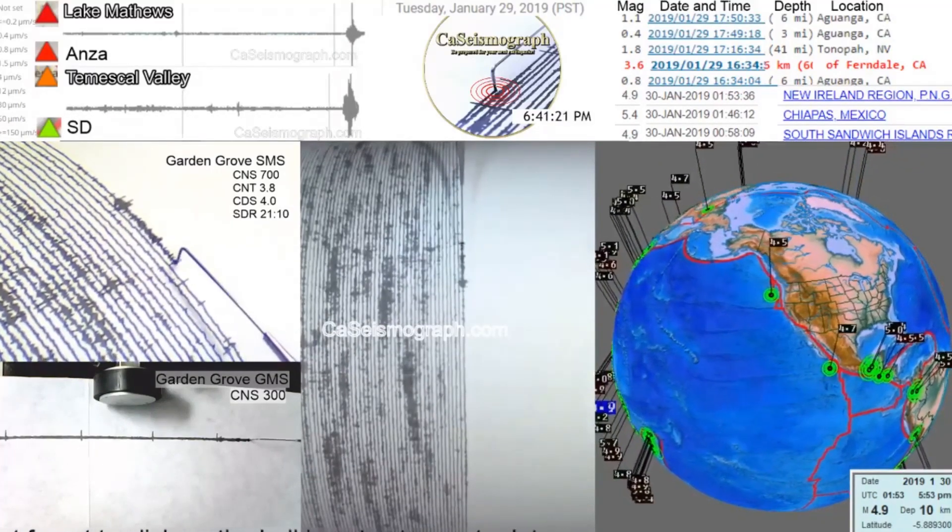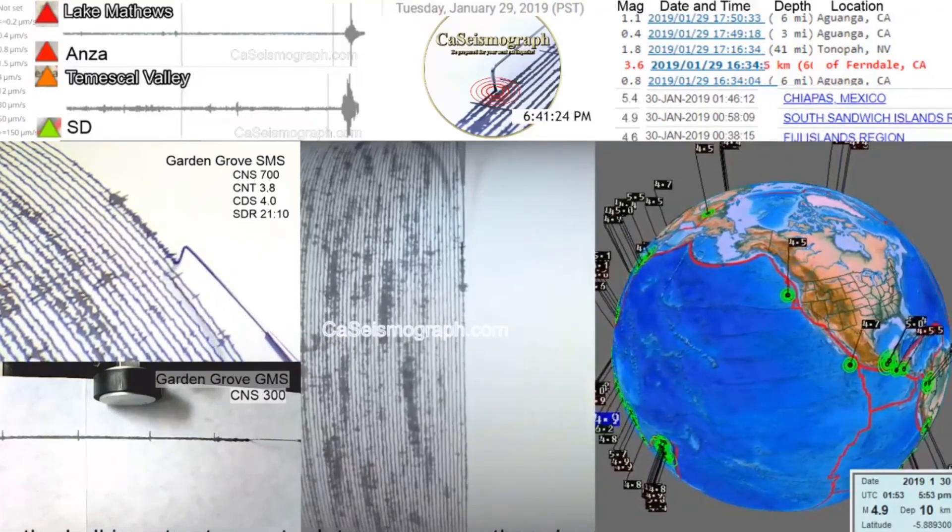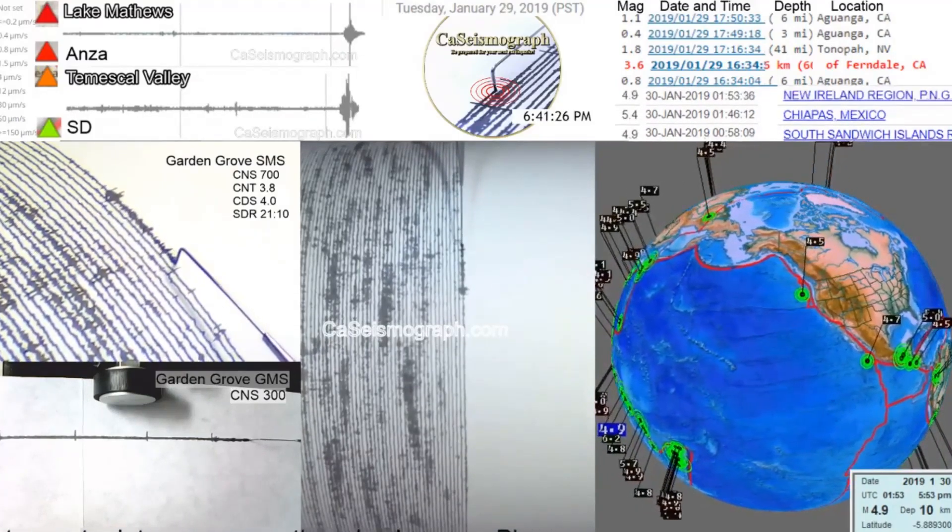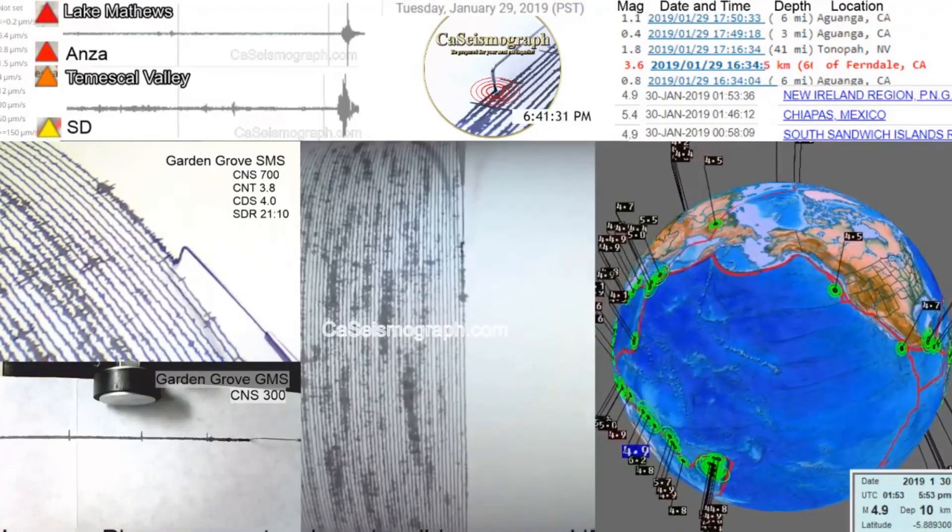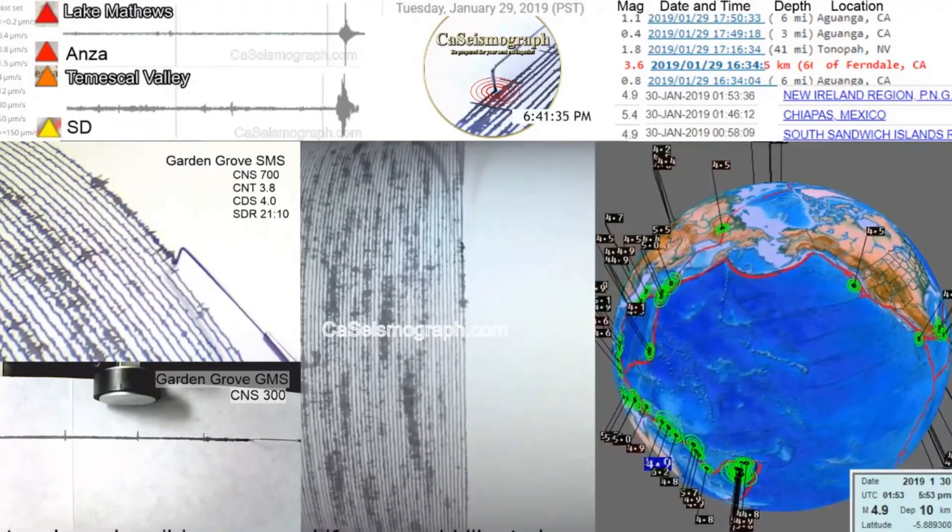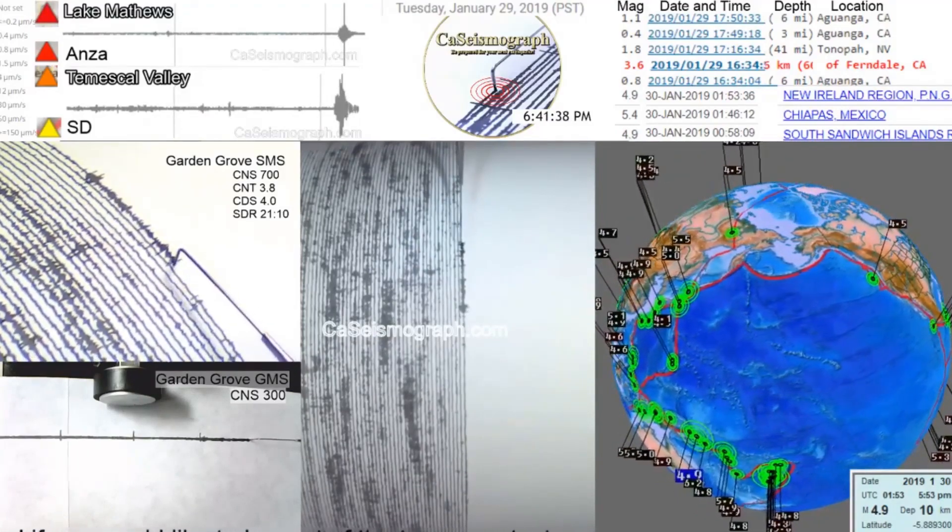So what's neat about it is if you look up at the Lake Matthews and the Mescal Valley, our digital sensors, you notice that the actual earthquake looks a lot shorter than the one that shows up on our sensor here in Garden Grove. And that's true.